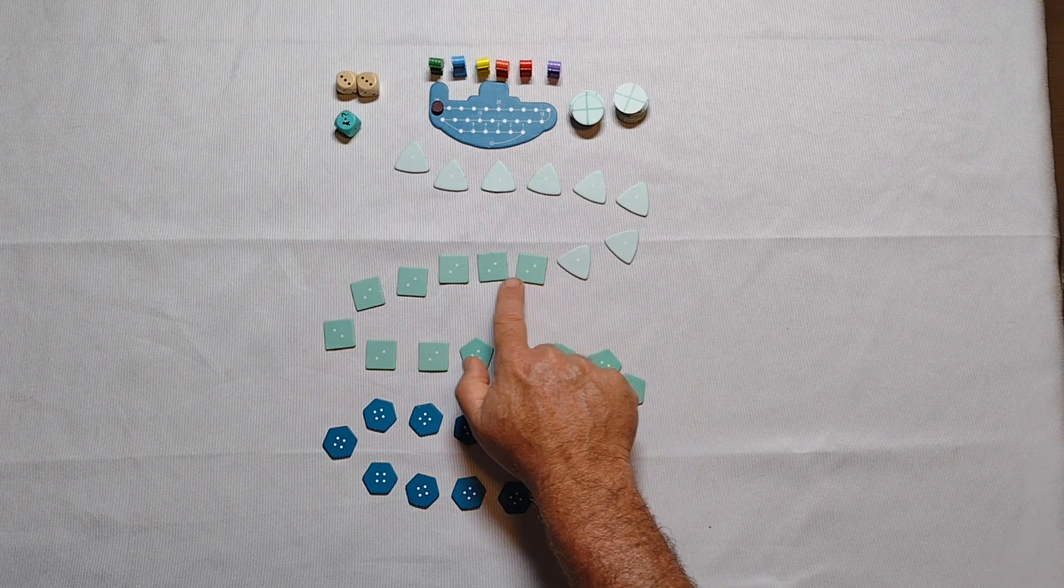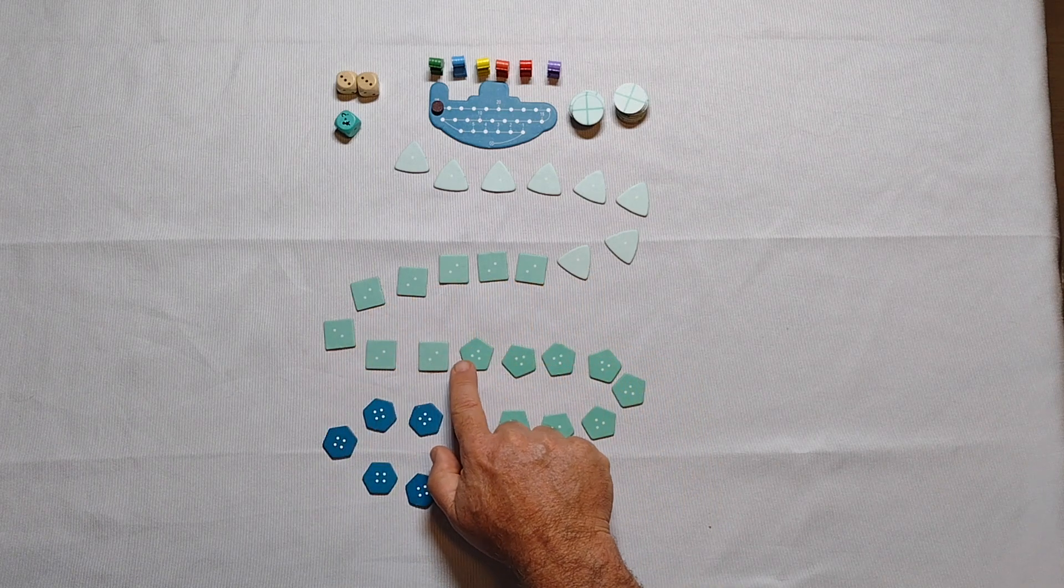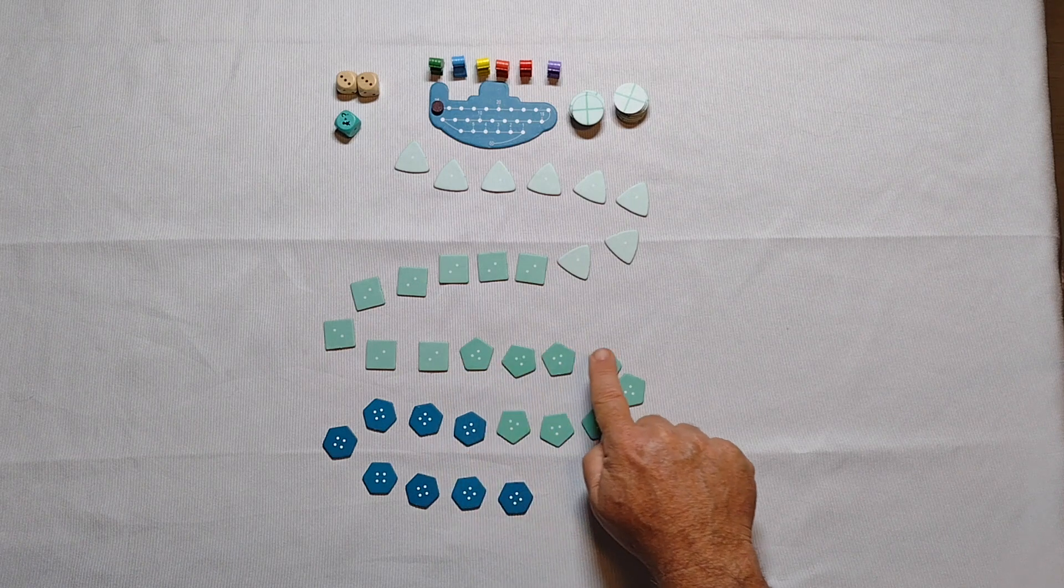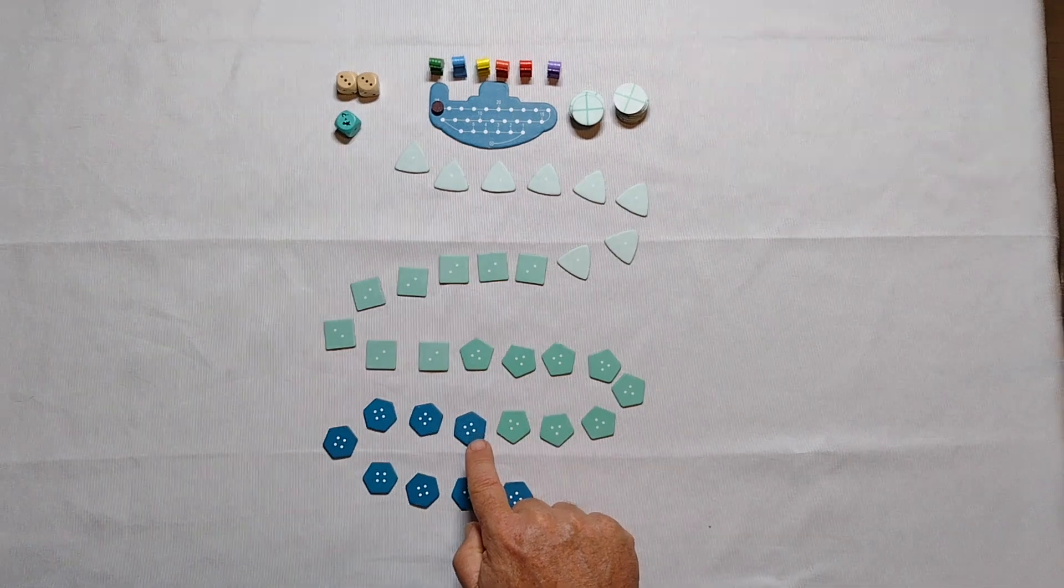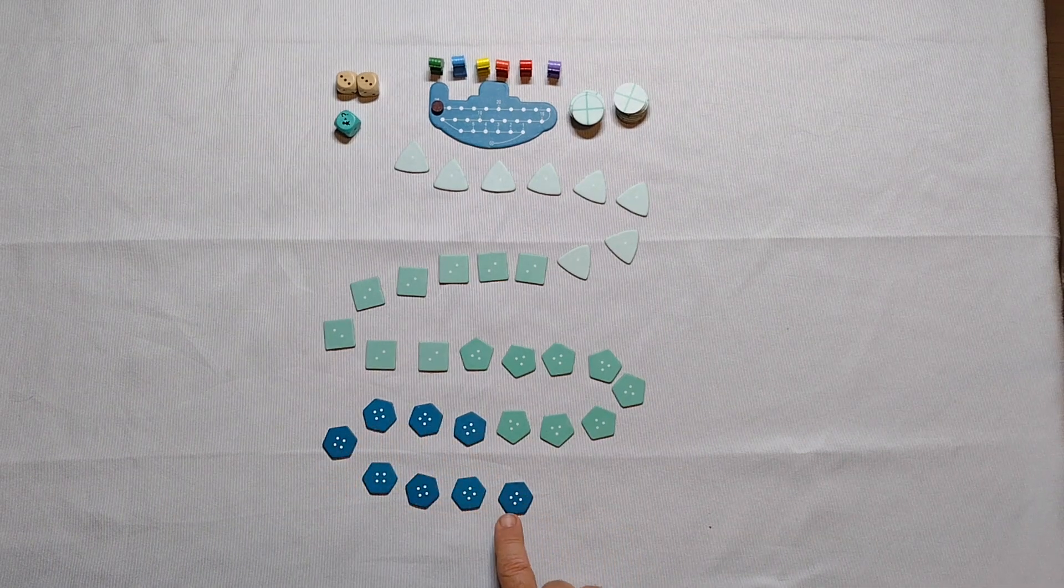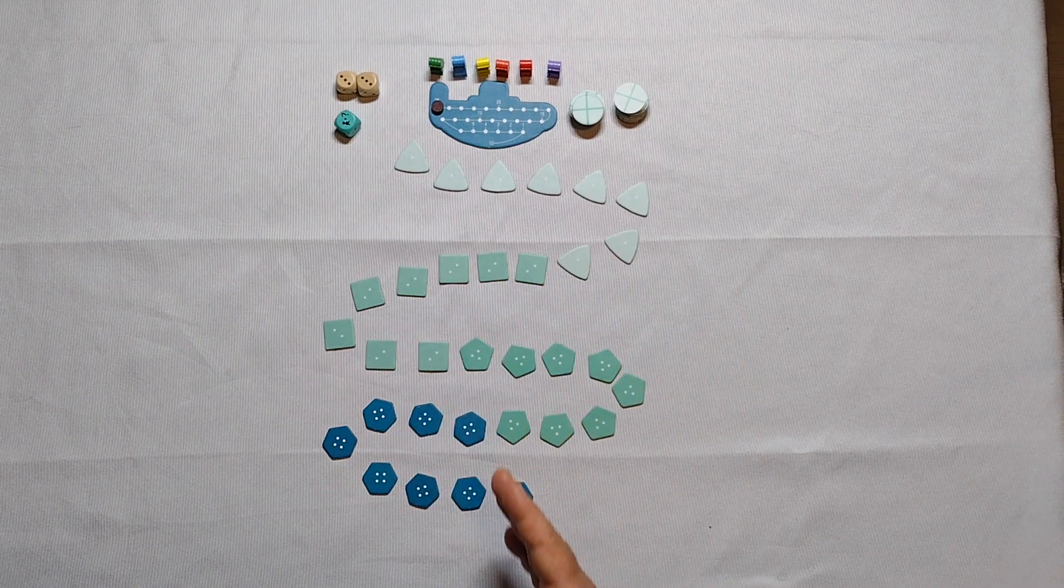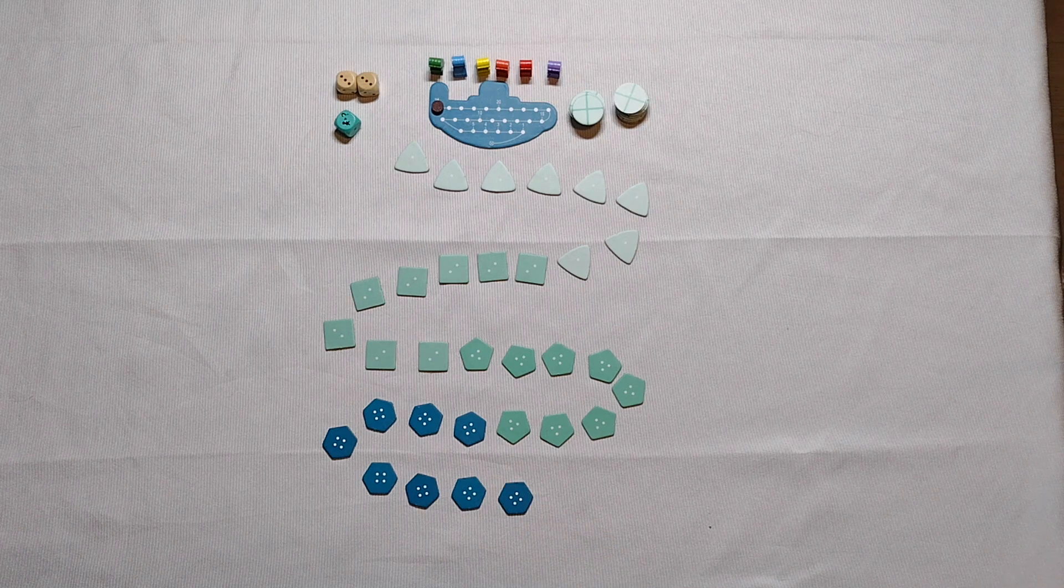Do the same for the square markers with two dots, then for the pentagon markers with three dots, and finally for the hexagonal markers with four dots, making one long serpentine line of increasingly valuable treasures.